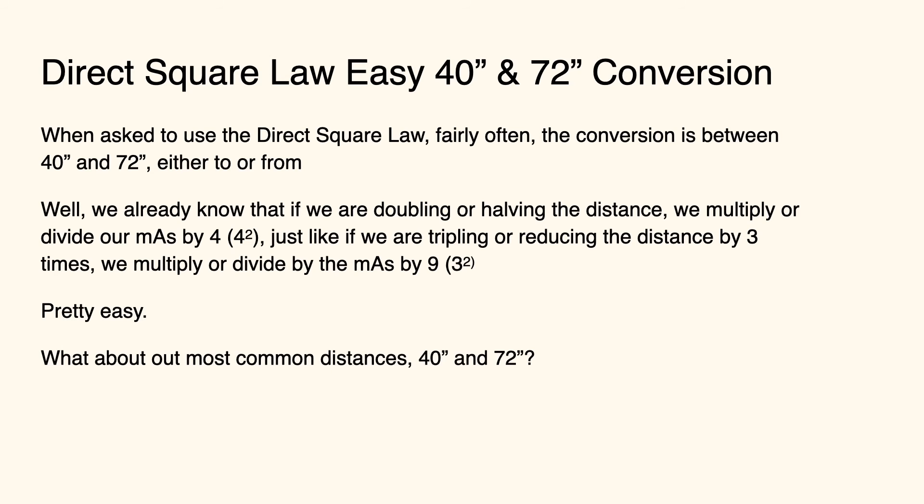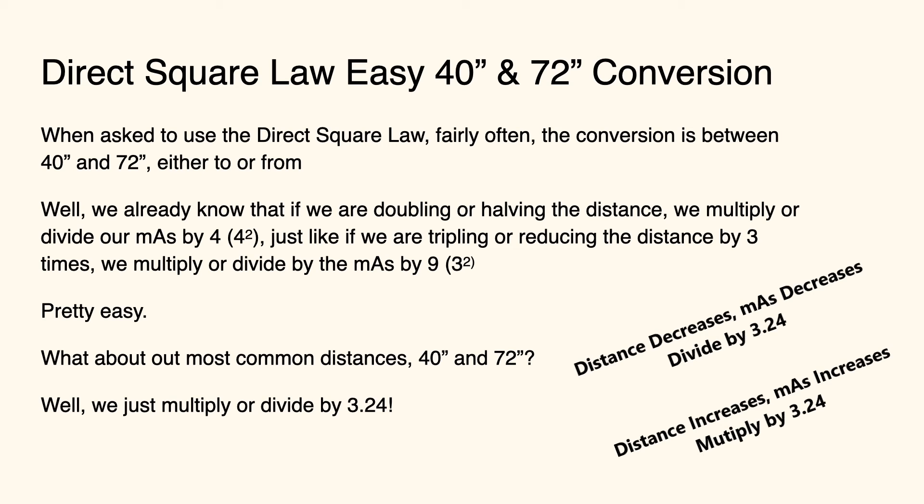So what about distances like 40 and 72? We just simply multiply or divide by 3.24. If your distance decreases, then your mAs also has to decrease. So you divide by 3.24. If your distance increases, your mAs also has to increase. So you simply multiply times 3.24.